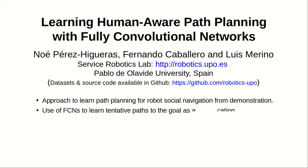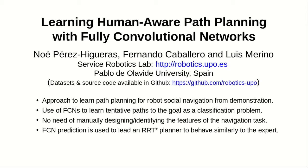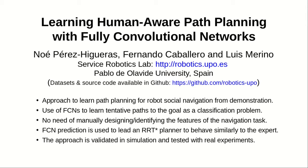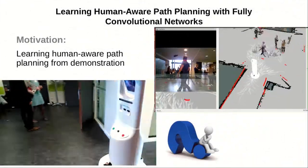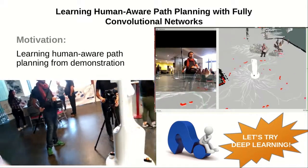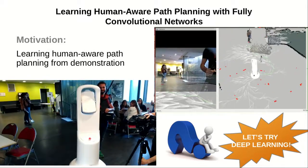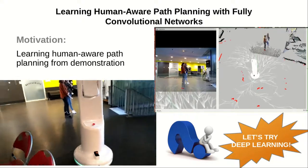We present an approach for learning human-aware path planning based on fully convolutional networks and RRT planners. The difficulty of mathematically defining the social navigation task motivated us to employ deep networks to approximate this behavior from demonstrations.